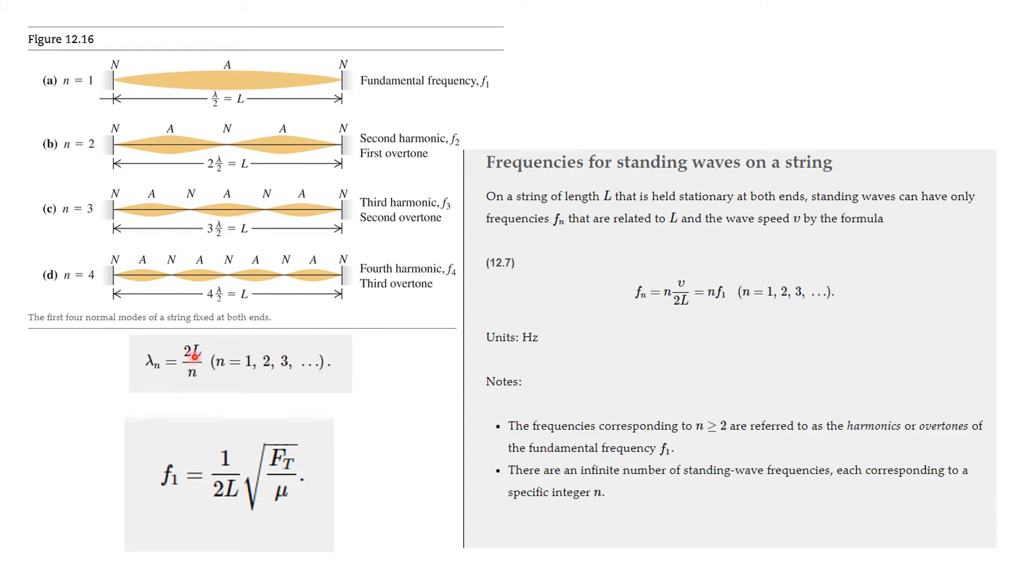F sub n is equal to n times V over 2L, which is n times F1. So the fundamental frequency really matters. On a string of length L held stationary at both ends, standing waves can only have frequencies F_n related to L and the wave speed by the formula F_n equals nV over 2L.